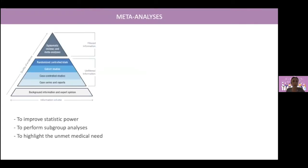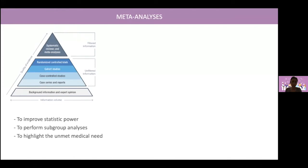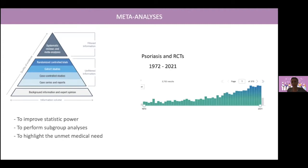The levels of evidence is a system used to rank medical studies based on their quality and their reliability. These levels of evidence are depicted in a pyramid model, and the higher the position is on the pyramid, the stronger the evidence is. At the top of the pyramid, you can see systematic reviews and meta-analysis, and this meta-analysis allows to improve statistical power, to perform subgroup analyses when data are available, and often also to highlight the unmet medical needs.